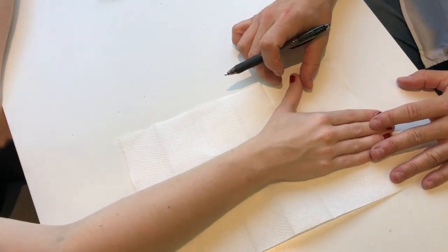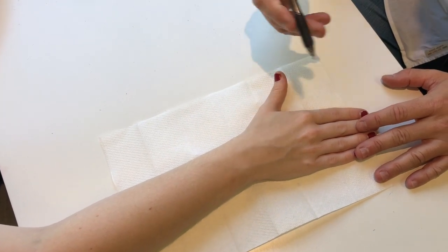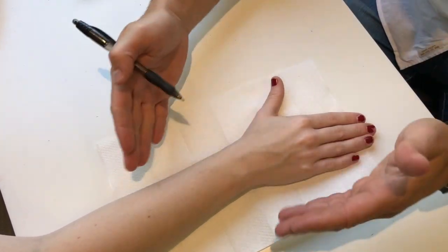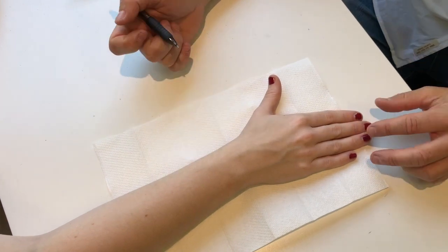So we're doing a wrist and thumb splint today. This would be a splint that you would use, so it's a volar wrist splint basically, but with a thumb component included.